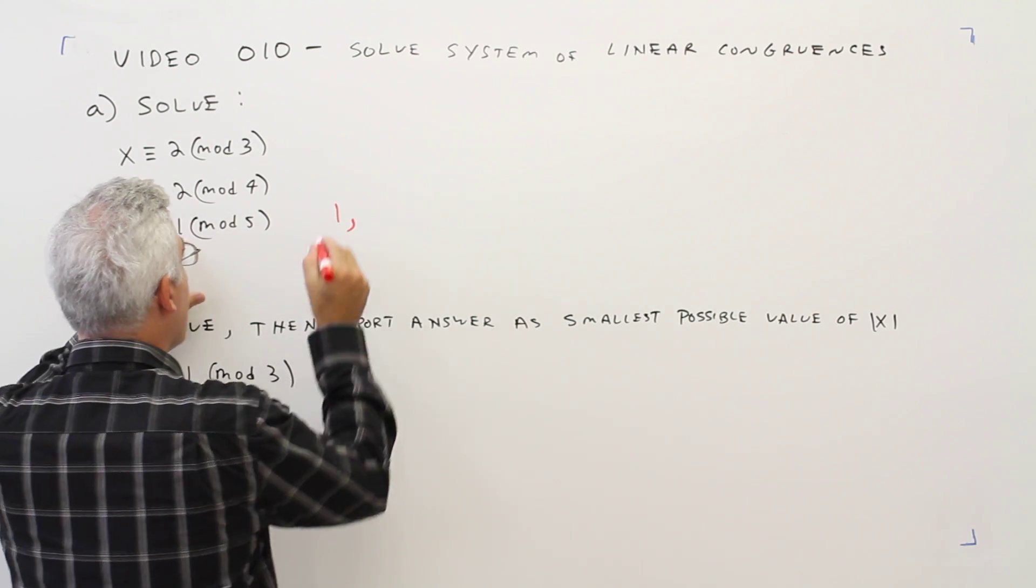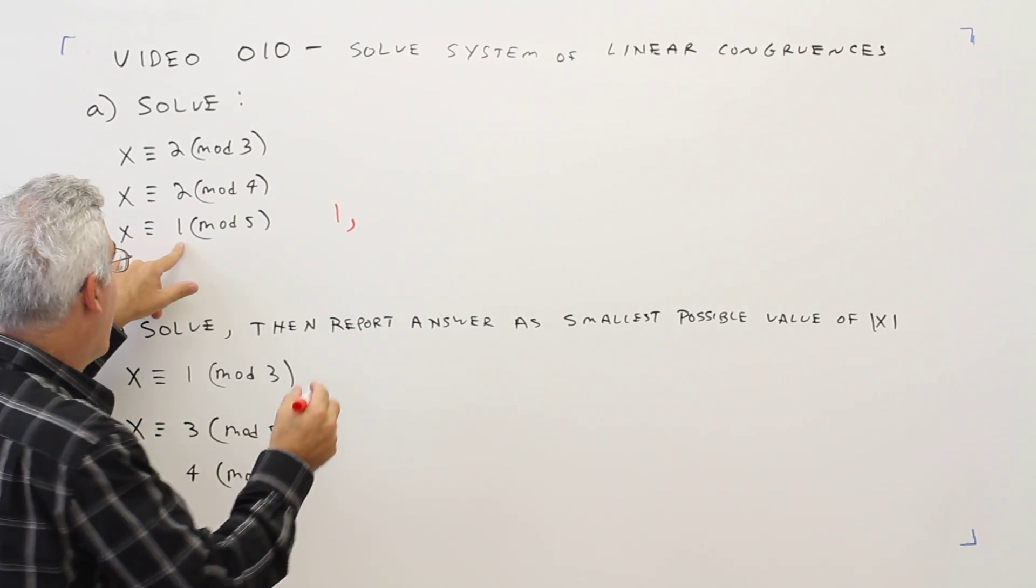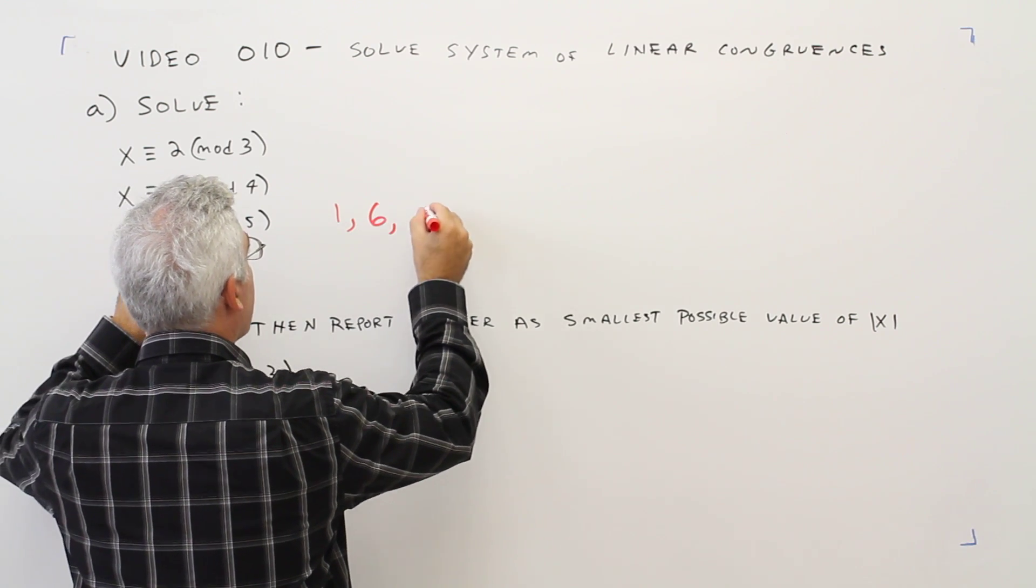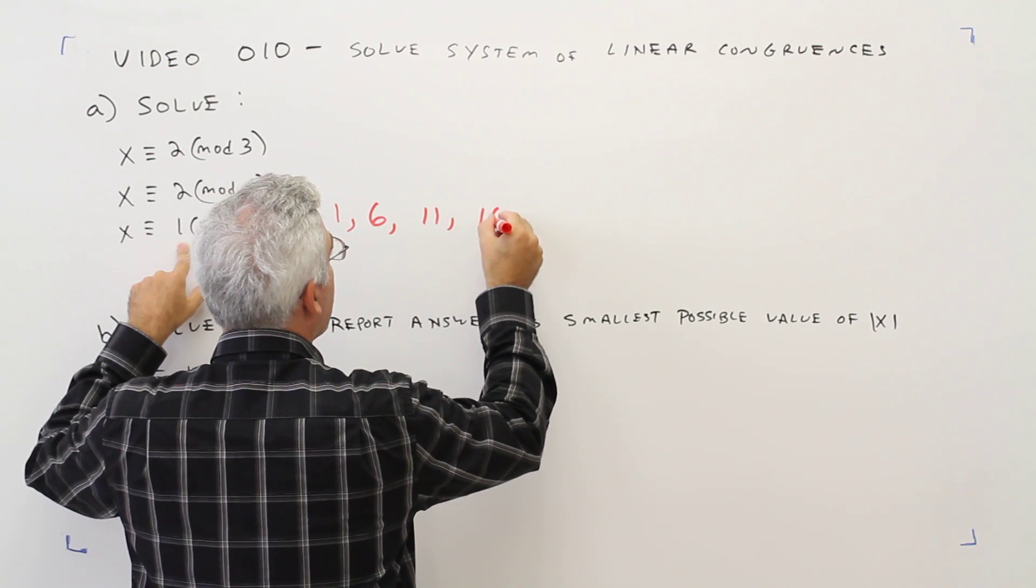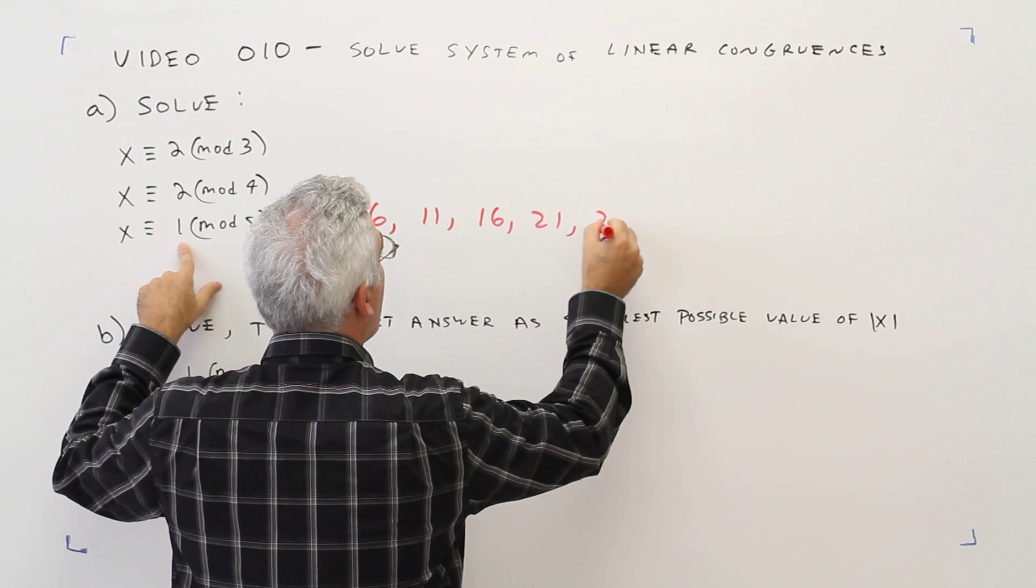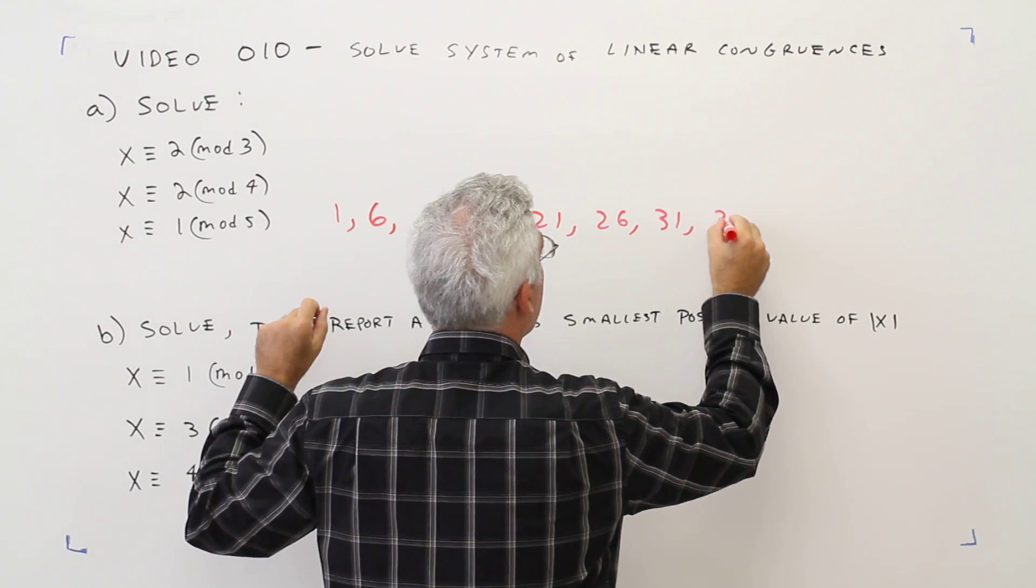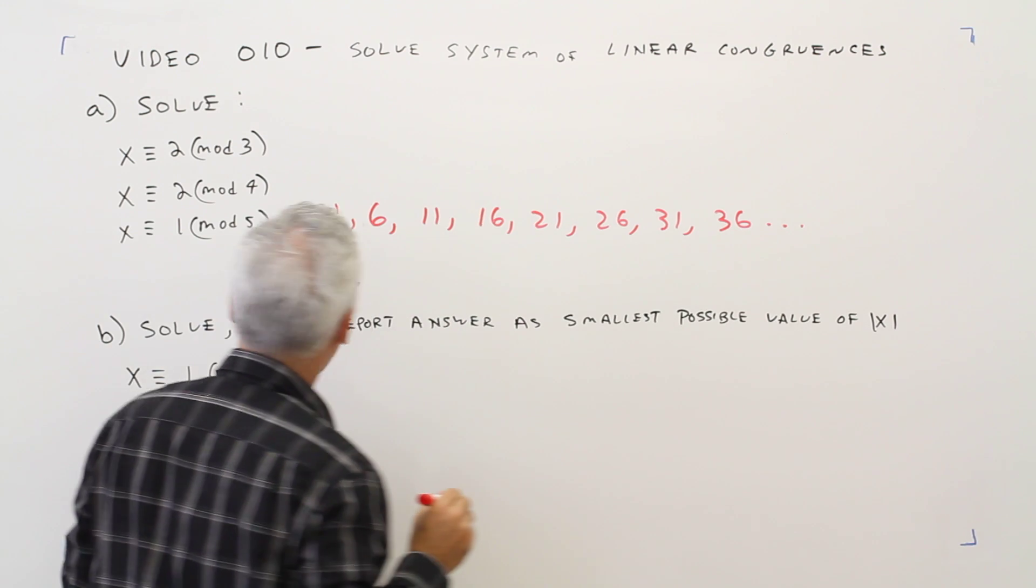So I'll start my list at 1 and just keep adding cycles of 5. So 6, 11, 16, 21, 26, 31, 36, etc.